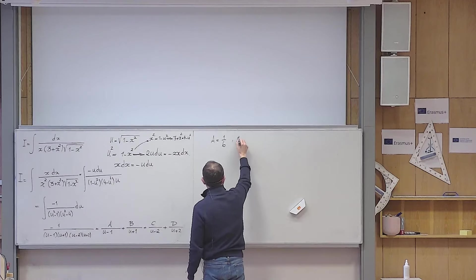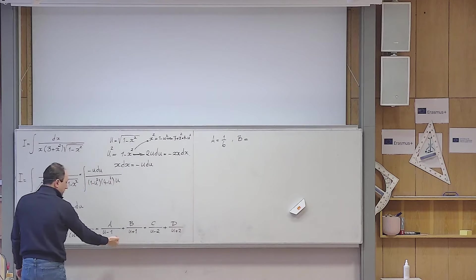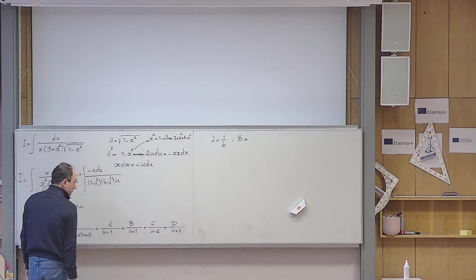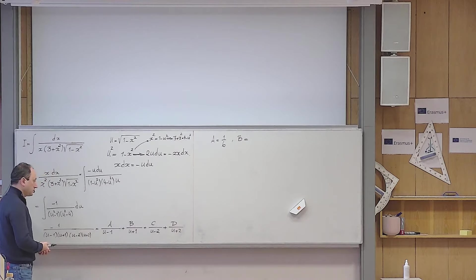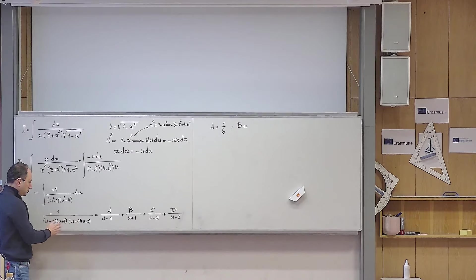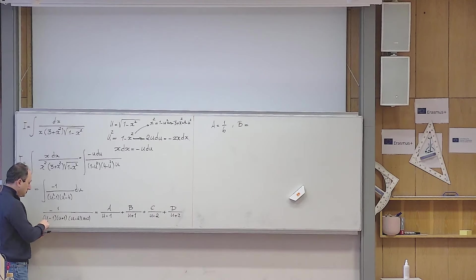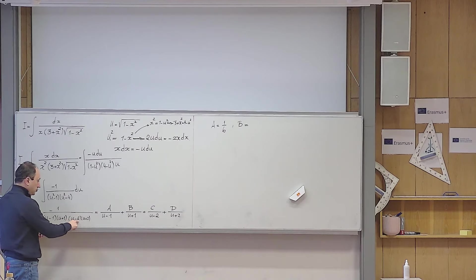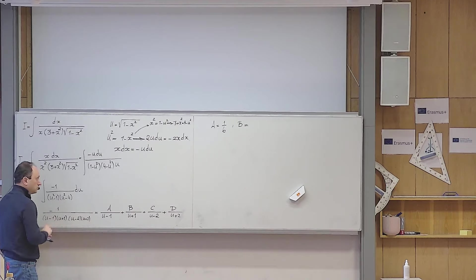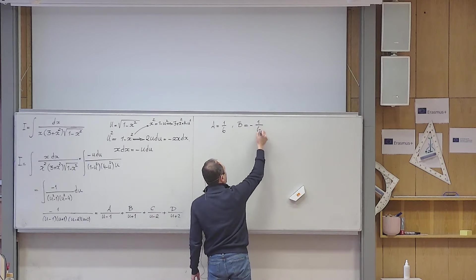For b, the denominator u plus 1 vanishes at u equals minus 1. Removing that factor and substituting u equals minus 1 gives: minus 1 over (minus 1 minus 1)(minus 1 minus 2)(minus 1 plus 2) equals minus 1 over (minus 2)(minus 3)(1) equals minus 1 over 6. So b equals minus 1 over 6.